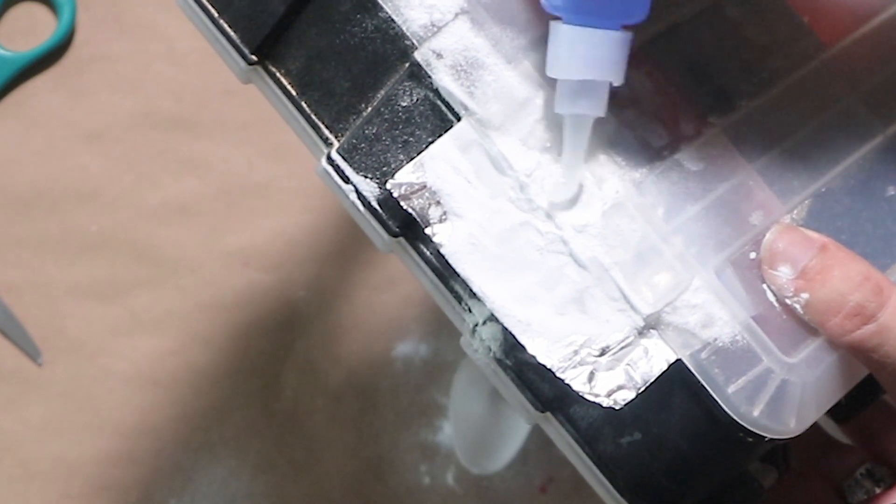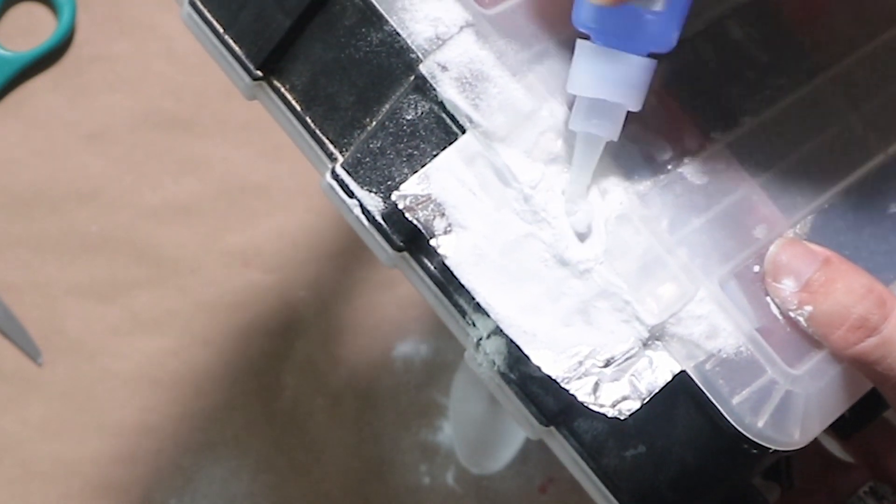However, if all you have is thick super glue, you can of course try putting down the super glue first and then sprinkling the baking soda on top of it.